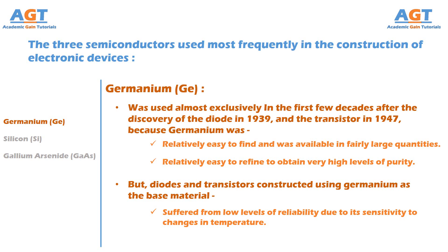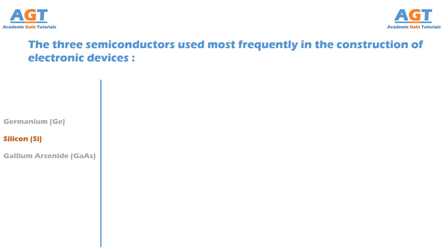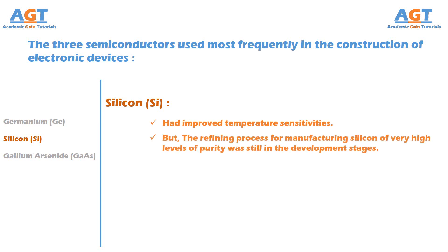At that time, scientists were aware that another material, silicon, had improved temperature sensitivities than germanium, but the refining process for manufacturing silicon of very high levels of purity was still in the development stages.